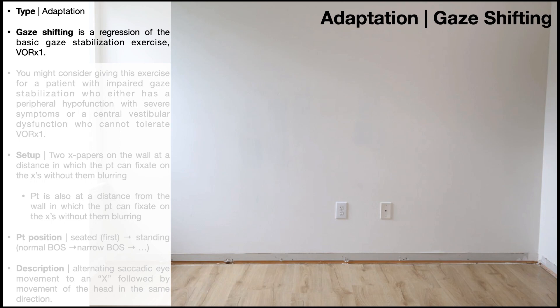Generally speaking, when somebody comes into the clinic and they have issues with gaze stabilization, the go-to exercise to begin with is the VOR times one. However, some individuals may not be able to stabilize their gaze with the VOR times one, even at slow rates, or the symptoms that they get might be so severe that it's unreasonable to give them the VOR times one to start with.